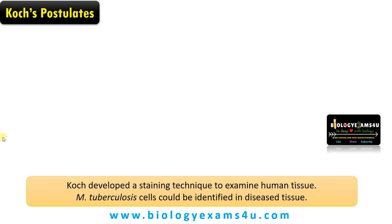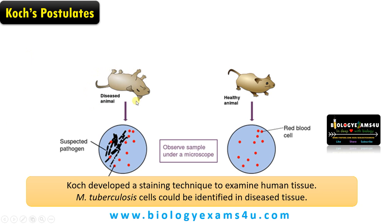Koch developed a staining technique to examine human tissue. He was working on tuberculosis, the causative organism being Mycobacterium tuberculosis. He could identify Mycobacterium tuberculosis cells in deceased tissue. From the tissues of a deceased animal he could identify the suspected pathogen, whereas in a healthy animal that particular causative organism is absent.